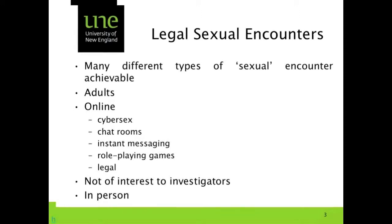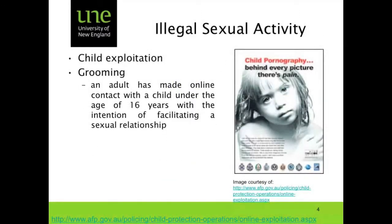In terms of illegal sexual activity — those that are of interest to policing and law enforcement — those which they actively pursue through various investigative techniques include child exploitation and grooming. Grooming is where adults have made online contact with a child under the age of 16 with the intention of facilitating a sexual relationship. The AFP, through its child protection operations, does a lot of work with partner agencies at both the Commonwealth and State and Territory levels, and with partner agencies internationally through Interpol and Europol, as well as bilaterally with other agencies, to investigate and disrupt or bring to justice those who perpetrate these crimes.